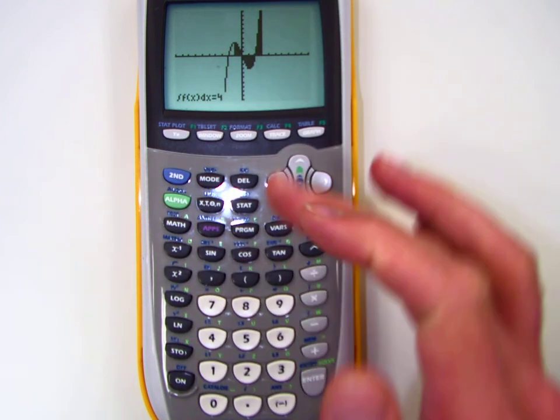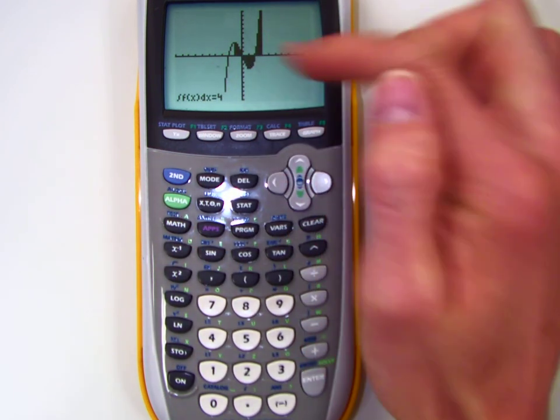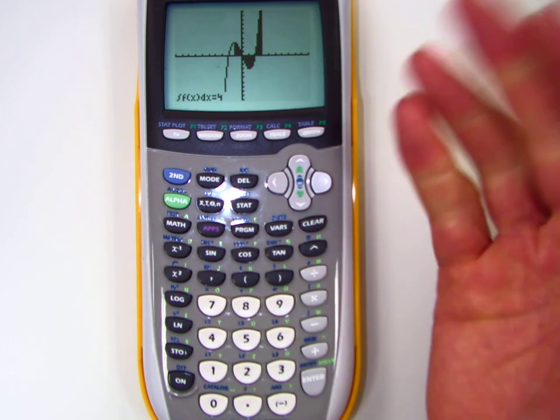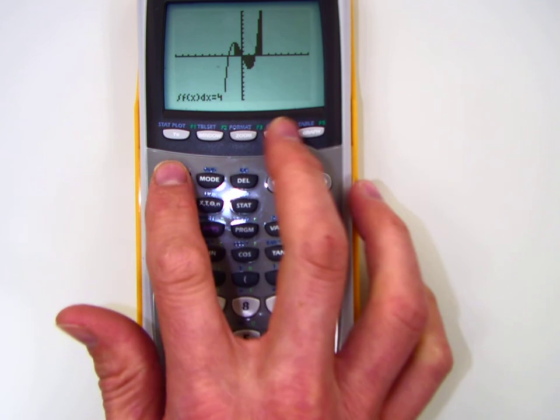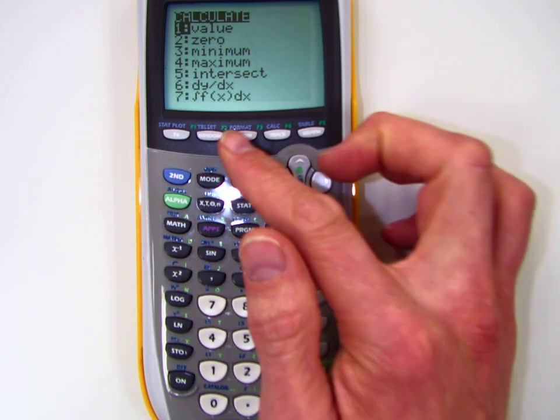the area between, it takes the area under the curve, between the curve and the x-axis basically, and it's saying the area adds up to four. It's really cool. It's all within this button.